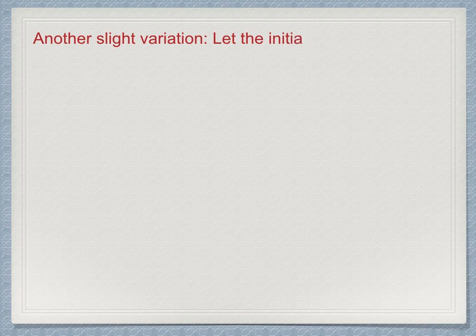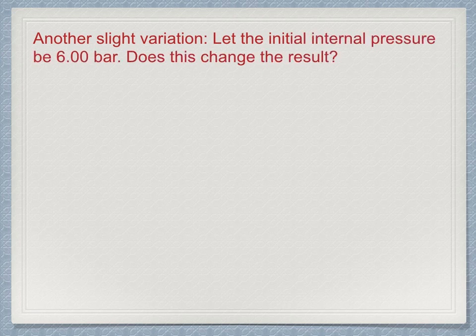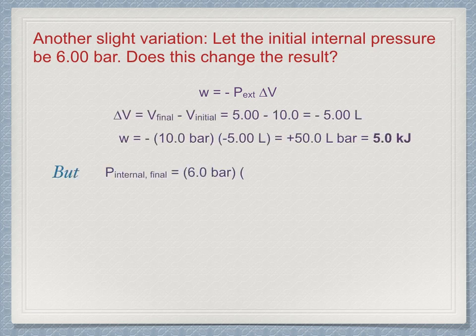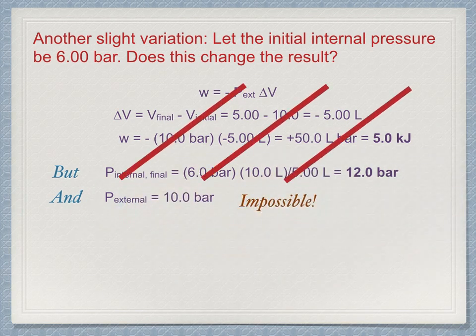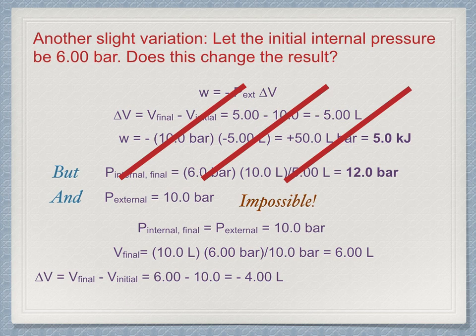Another slight variation: let the initial internal pressure be 6 bar. The work calculation seems to be the same again, but the final internal pressure would be 6 times 2 equals 12 bar. This is greater than the external pressure, so it could not actually be compressed all the way to 5 liters. The question describes impossible events and does not have an answer. In fact, the system would be compressed until the internal pressure equaled the external pressure of 10 bar. Using P1V1 equals P2V2, the final volume would be 6 liters. The change in volume is 6 minus 10, or minus 4 liters, and the work done by the surroundings on the system is just 4 kilojoules.